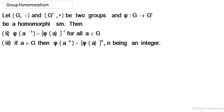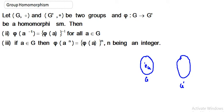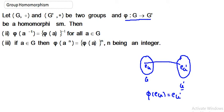Hello and welcome back. Today we are going to talk about another two properties of group homomorphism. Last day we talked about one property: if we have a group G and another group G dash, the identity elements of group G always map to the identity elements of group G dash. So phi of e_G equals e_G dash. That is the first property. Here we have two more properties — property 2 and property 3.